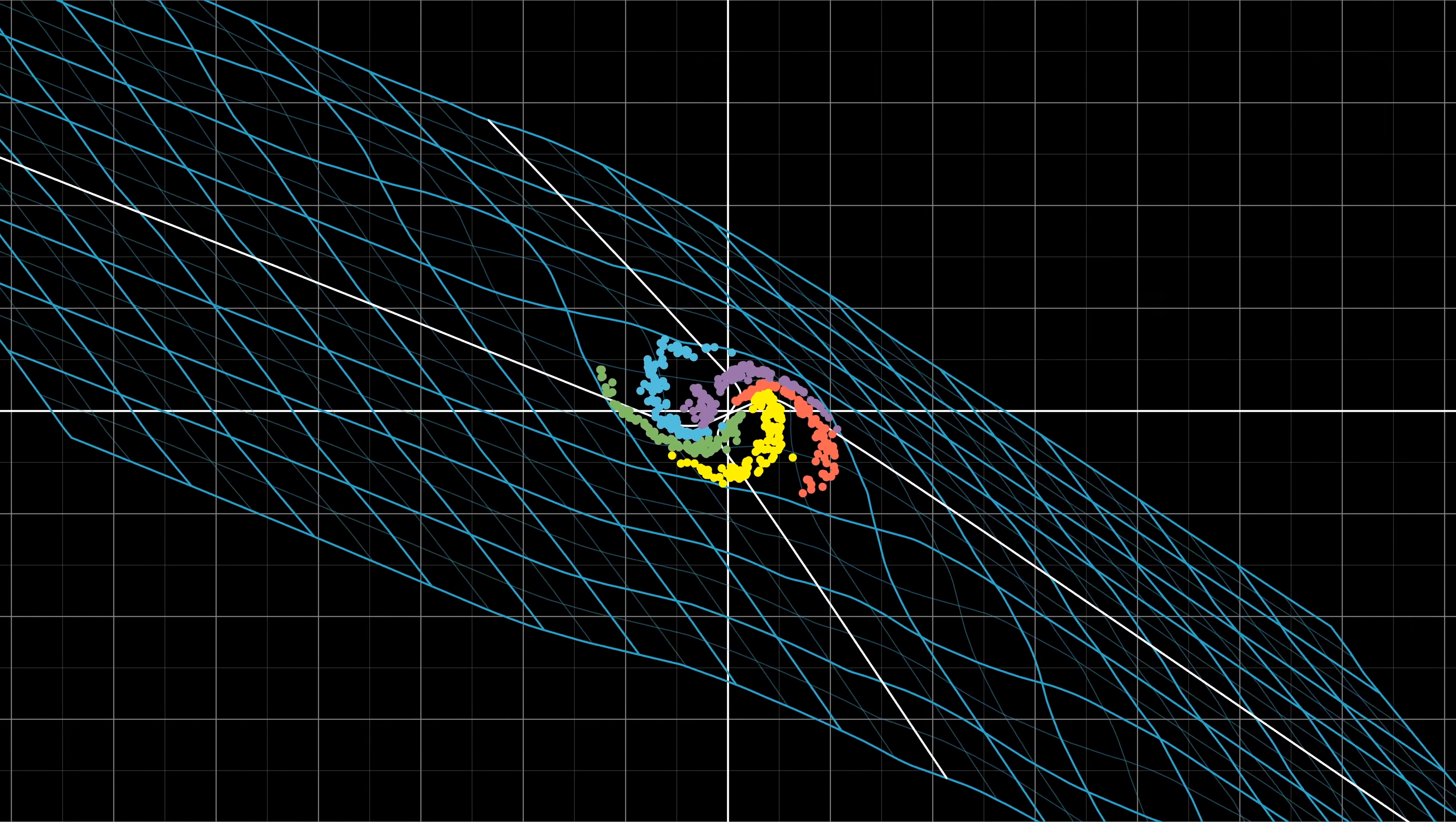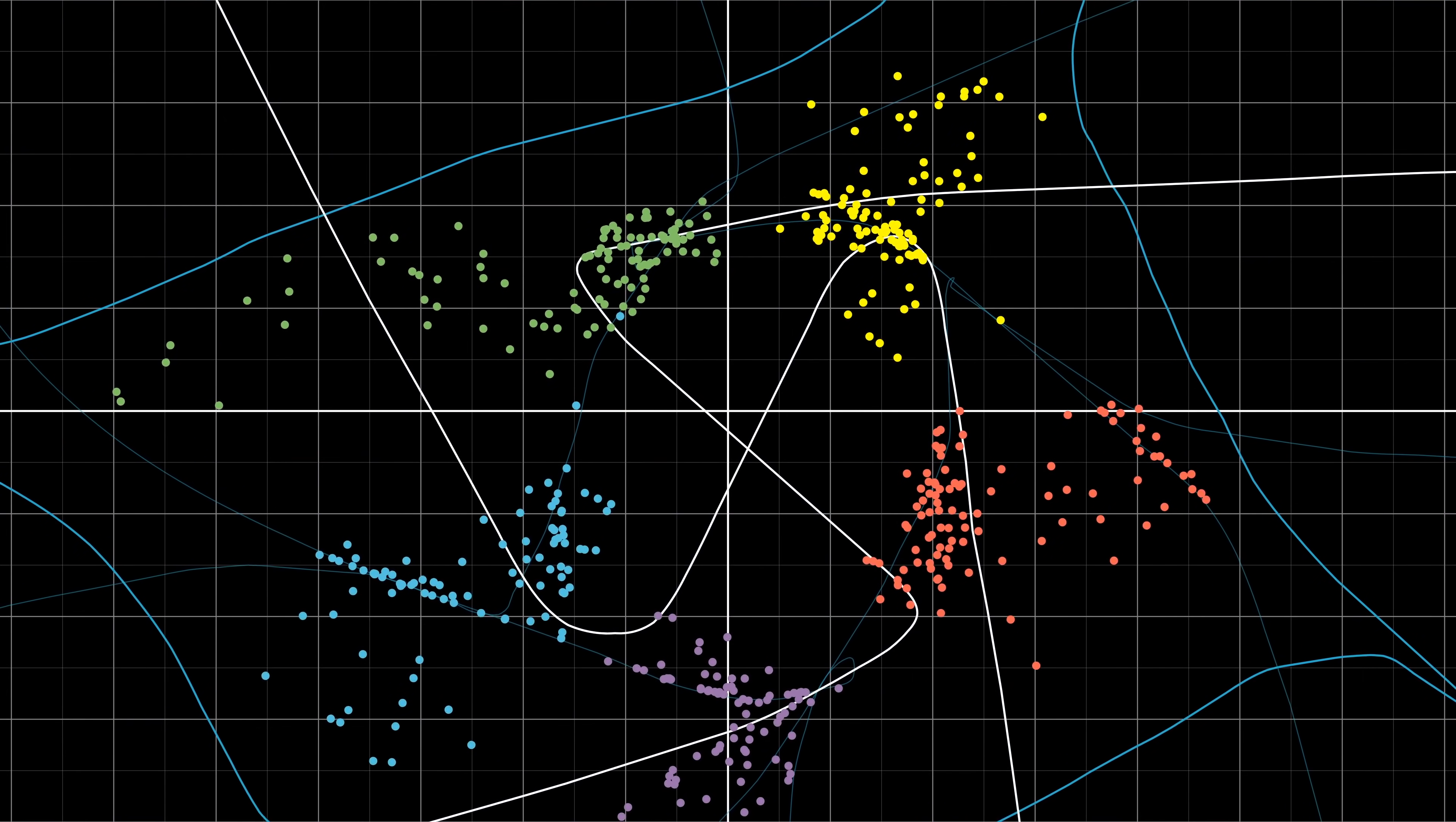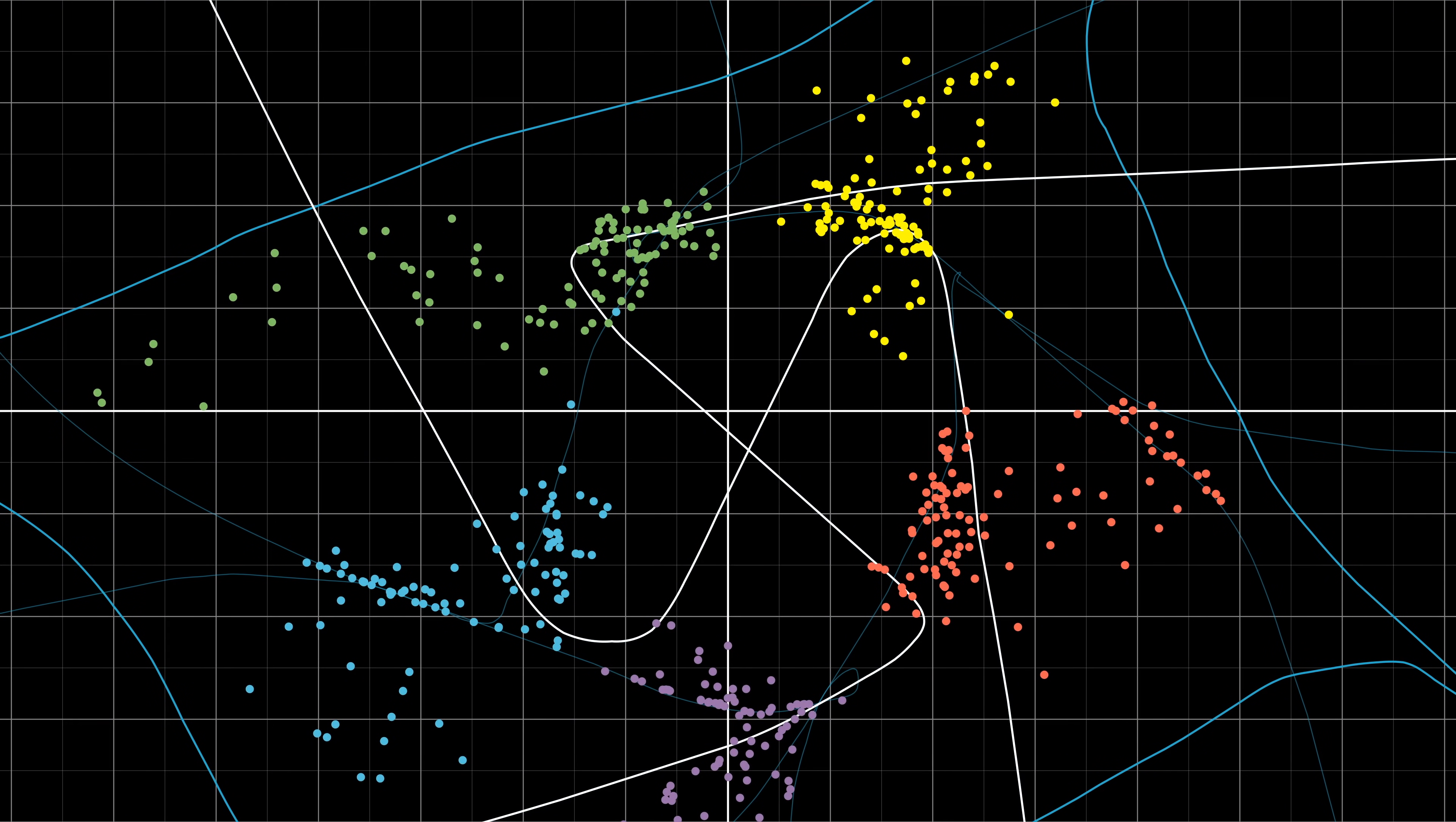And what we see, in my opinion, is beautiful. The original dataset isn't linearly separable by any means, but the neural network performs some non-linear transformation that transforms the dataset into something that is linearly separable.